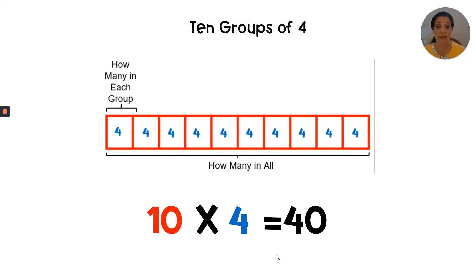The label at the top should be a four, the label at the bottom should be forty, and we know that there are ten groups of four.